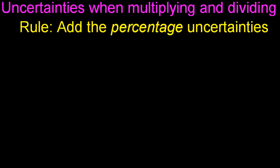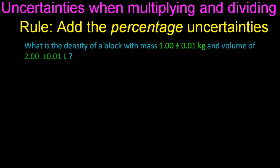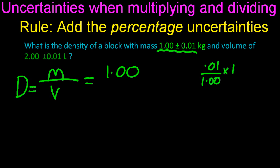So the rule for multiplying and dividing is that you add the percentage uncertainties. So let's try this simple question. What's the density of a block with mass 1kg and a volume of 2 litres? Well, a litre is a decimetre cubed. The IB normally uses decimetre cubed. I love density. You see that little heart there? Density is mass over volume. So I've got 1kg mass.